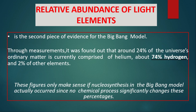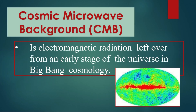Another evidence that proves the Big Bang Theory is the relative abundance of light elements — this is the second piece of evidence for the Big Bang model. Through measurements, it was found that around 24% of the universe's ordinary matter is comprised of helium, about 74% is hydrogen, and only 2% is other elements. Relative abundance of light elements is thus one of the evidences that proves the Big Bang model.